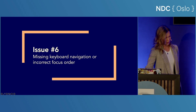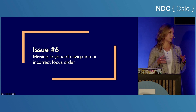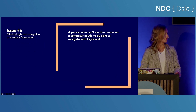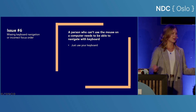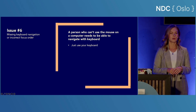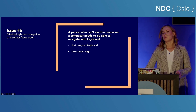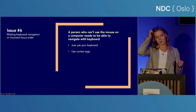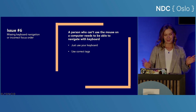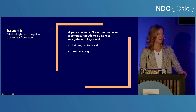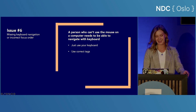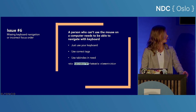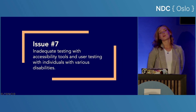Issue number six: missing keyboard navigation or incorrect focus order, hindering people who rely on a keyboard to navigate your page — people who can't use a mouse. One easy way to check your page is to use your own keyboard. Just use tab to navigate through everything and make sure everything is logically ordered and accessible. Make sure you've used the right HTML tags, because HTML takes care of a lot of the focus management. You can use tabindex if needed, but try not to.